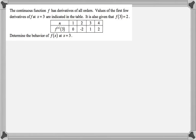And we know that the first derivative, if you look at the table, the first derivative at 3 is 0, the second derivative at 3 is negative 2, and so on. So that's how you read the table.